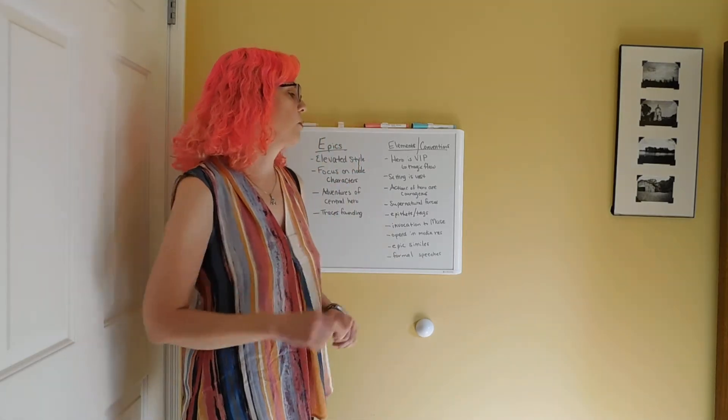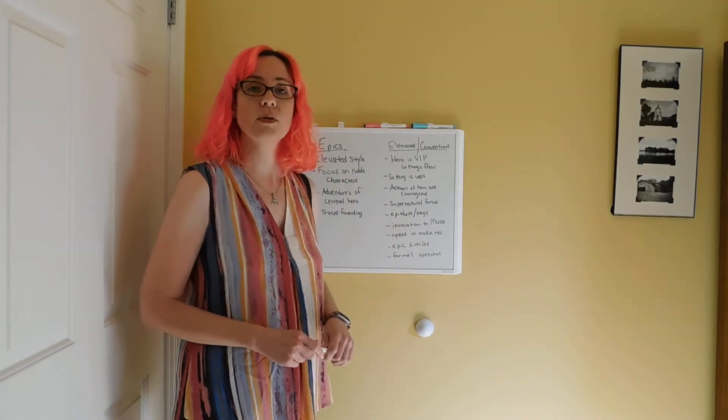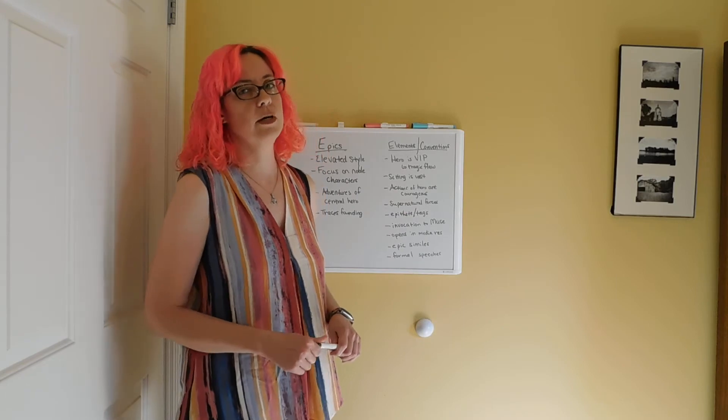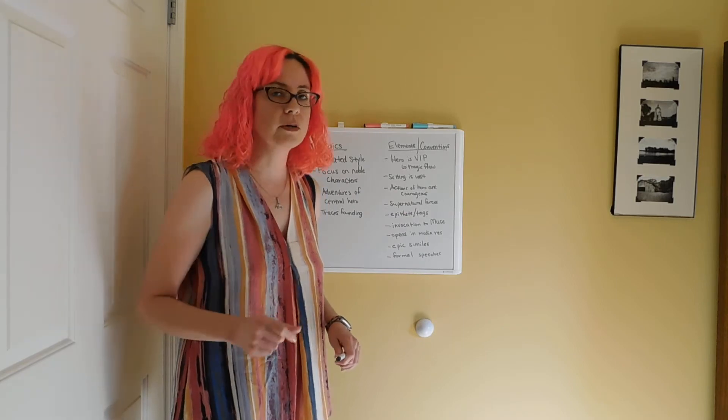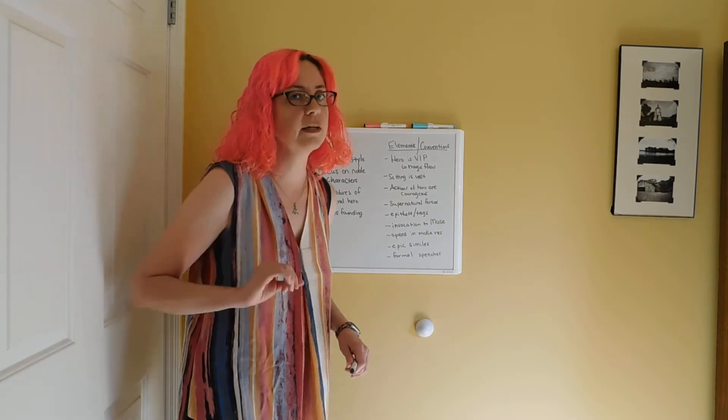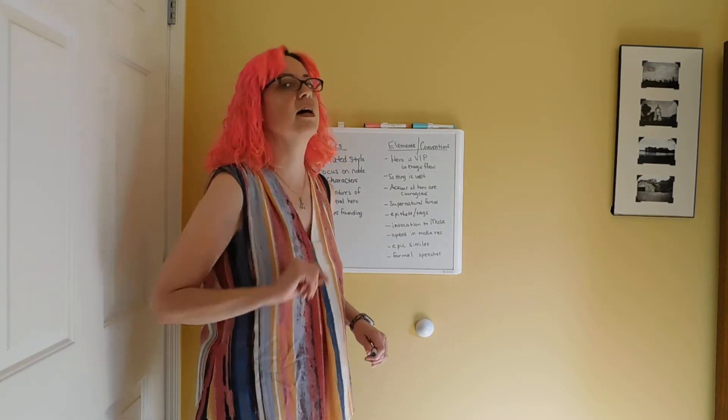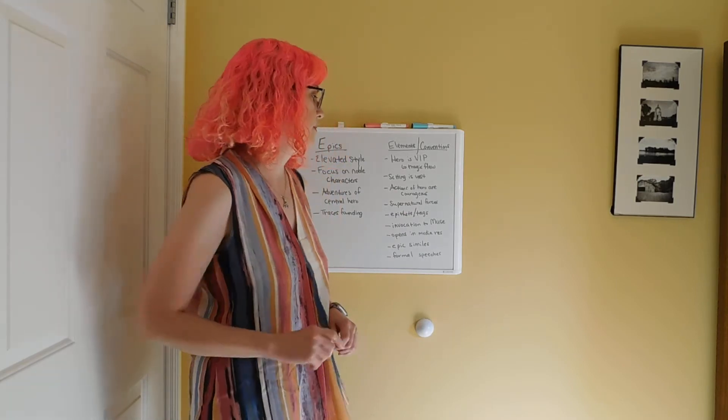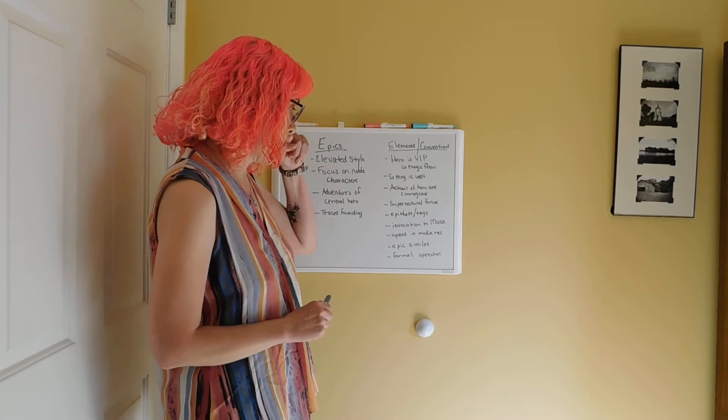The number one thing we want to know about Odysseus — he's a man of many wiles. He's very smart, very wily, and can pull off a lot of stunts. So that's his tag.